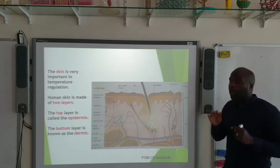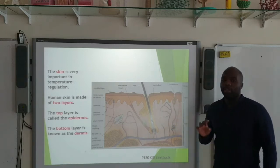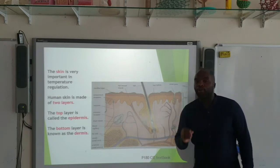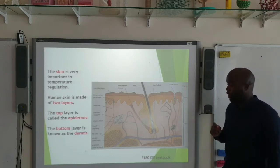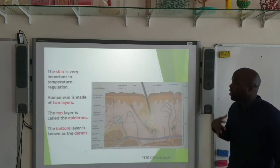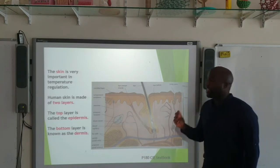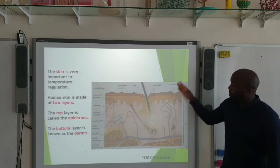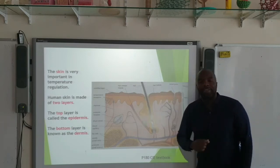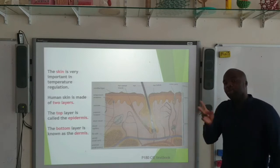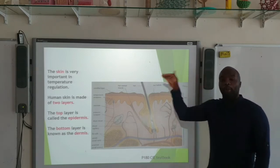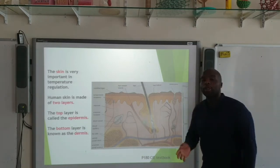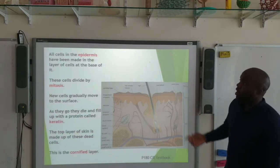Before we look at maintaining a constant temperature, it's important to get familiar with the skin, because the skin is really important in terms of temperature regulation. This diagram is from page 180 of the CIE textbook — make sure you're familiar with the different layers of the skin. The human skin is made of two layers: the top layer, known as the epidermis, and the bottom layer, known as the dermis.